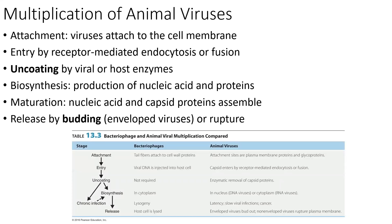Welcome to the next video in the virus video series. This video is all about the multiplication of animal viruses. You're going to notice some similarities between animal viruses and bacteriophages, but make sure you're able to keep the steps separate while also noting any similarities. There will be some key terms associated with animal virus replication that you'll want to associate only with animal viruses. There are six steps in the animal replication cycle.